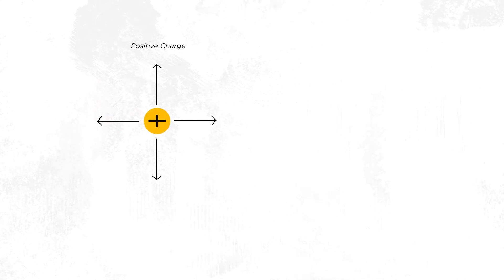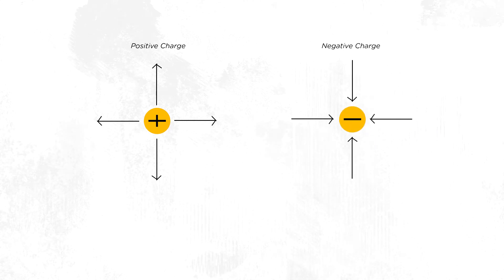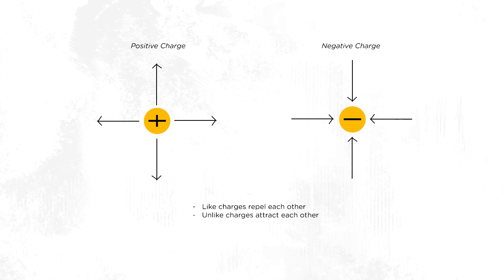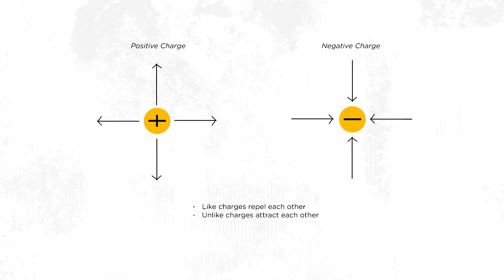In terms of polarity, charges can either be positive or negative. In electromagnetic theory, a positive charge is symbolized by diverging lines, or lines moving away from the charged particle. A negative charge has converging lines, or lines that move towards the charged particle. Based on this convention, two fundamental principles are derived: the first is that like charges repel each other, and the second is that opposite charges attract each other.